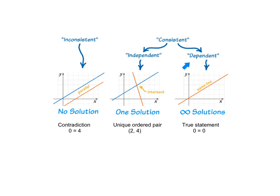If we have a consistent and dependent system of equations, the graph looks like one line, because really both equations are exactly the same, same y-intercept and same slope. We have an infinite number of solutions, and if we solve it algebraically, we get a true statement like 0 equals 0.